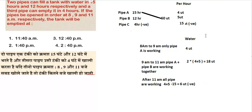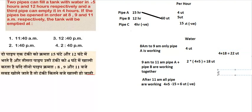By 11 am, the total water in the tank is 4 plus 18 = 22 units. After 11 am the tank empties at 6 units per hour. Dividing 22 units by 6 units per hour gives us the remaining time.